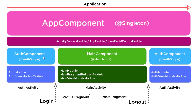Auth Component is a subcomponent of the App Component, and Main Component is a subcomponent of App Component. Auth Component is on the same level as Main Component — think of it like a tier system. App Component would be tier one, and then Auth Component and Main Component would be tier two. They're technically called subcomponents — that's the technical Dagger terminology.